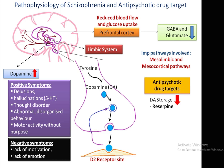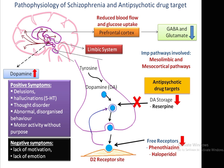Different antipsychotic drugs act on different targets. The first important target is dopamine storage — reserpine blocks the overall storage of dopamine in neurons, improving both positive and negative symptoms of schizophrenia. The second target involves D2 receptors, where free receptors are reduced with the help of phenothiazine and haloperidol, which act on the D2 receptor site.